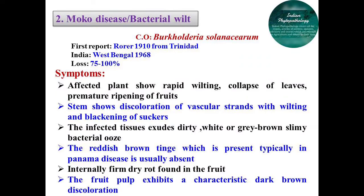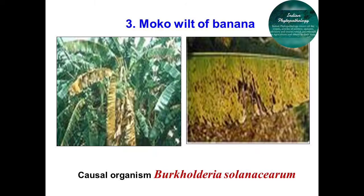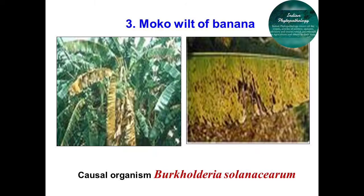The next important disease of banana is wilt. There are two types of wilt in banana: bacterial wilt caused by Burkholderia solanacearum, and Panama wilt caused by Fusarium species. In both wilts, plants show a completely wilted appearance, collapse, and in some cases premature ripening of fruits, along with internal breakdown of tissues.